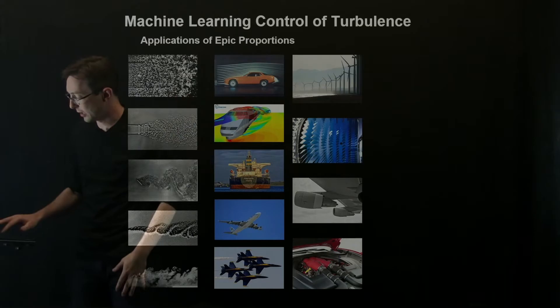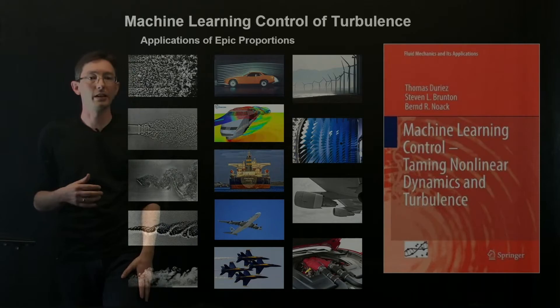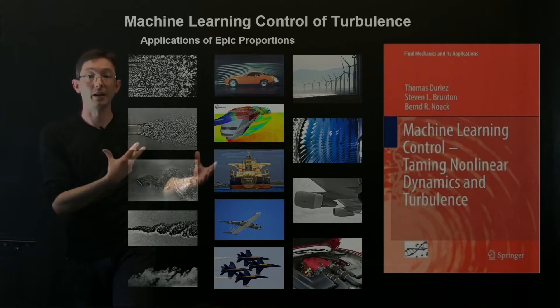So, again, just a shameless plug. We wrote a book on this, a Springer book that you can read about machine learning control, taming nonlinear dynamics and turbulence. That's with Thomas Duryea, myself and Bernt Nowak, where we talk about applying these genetic programming controls to some turbulence control problems.